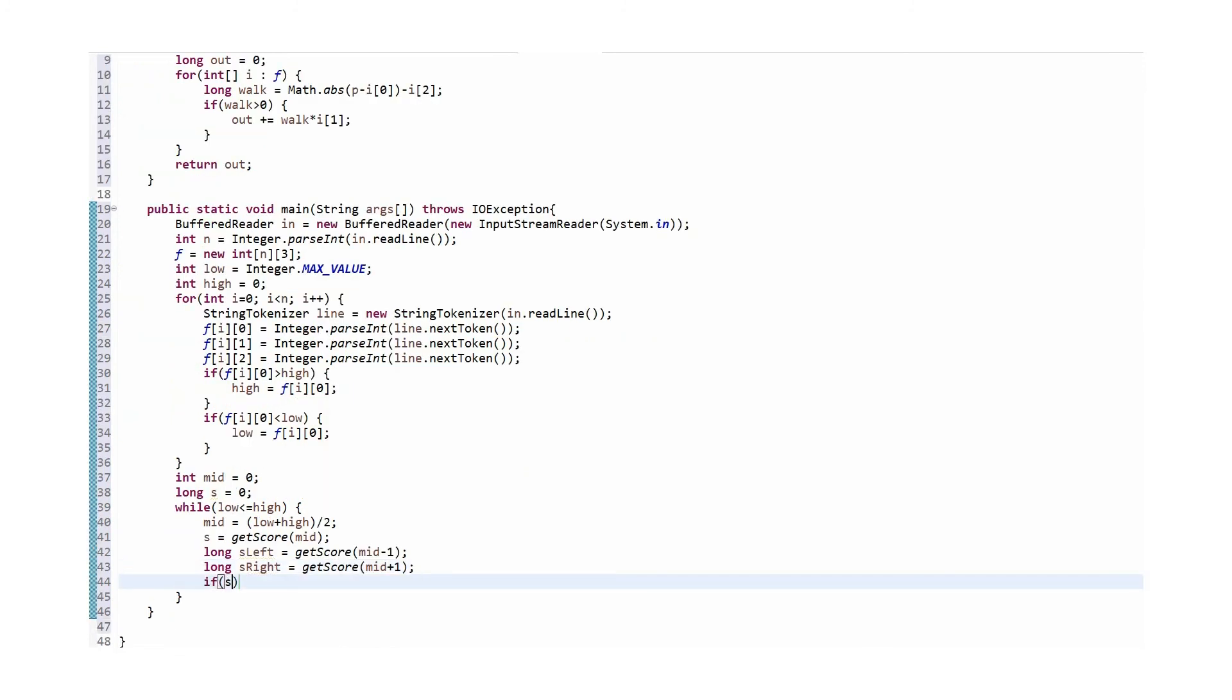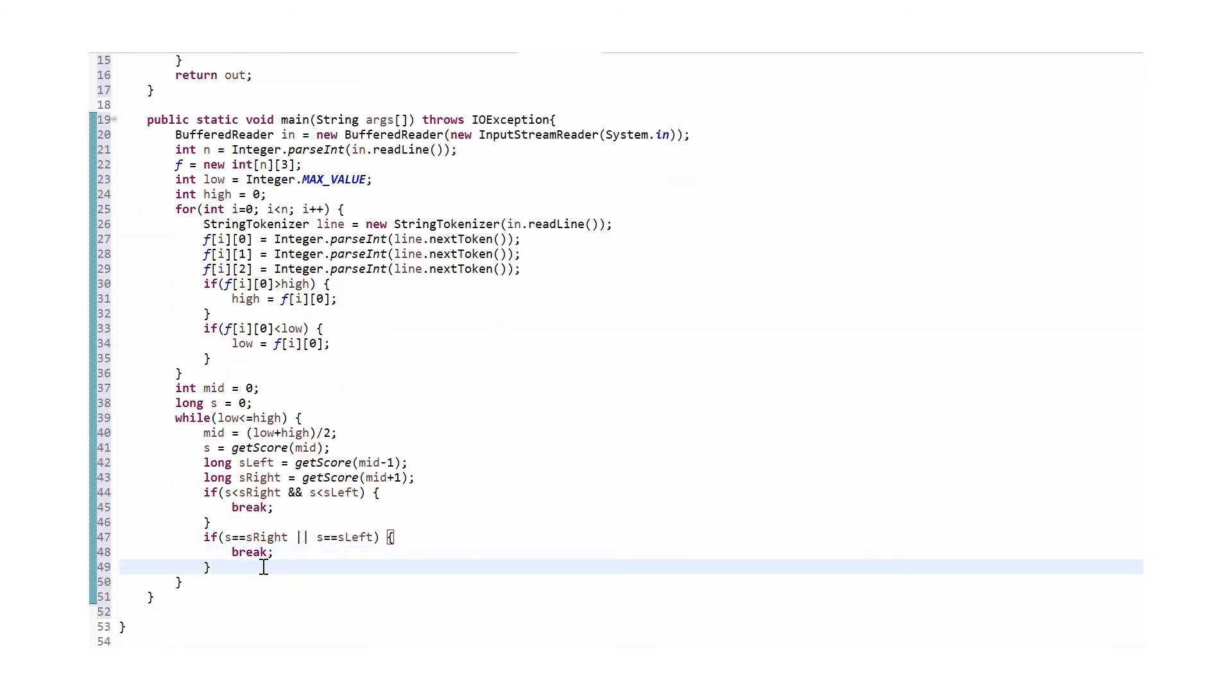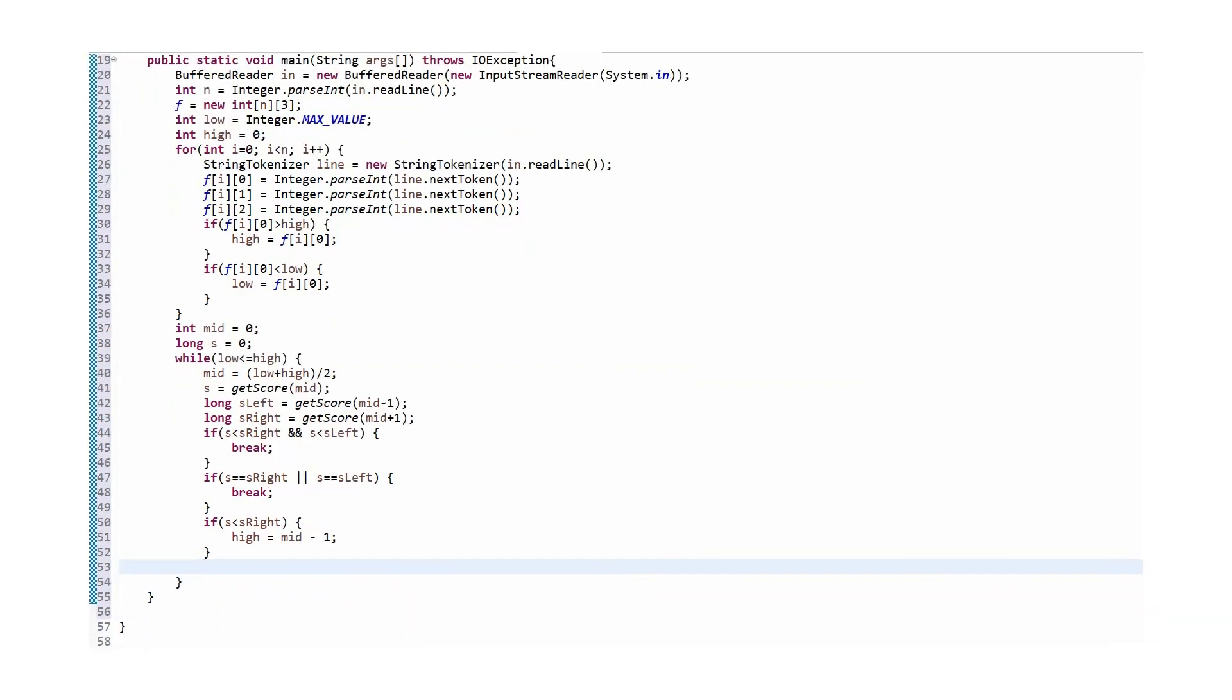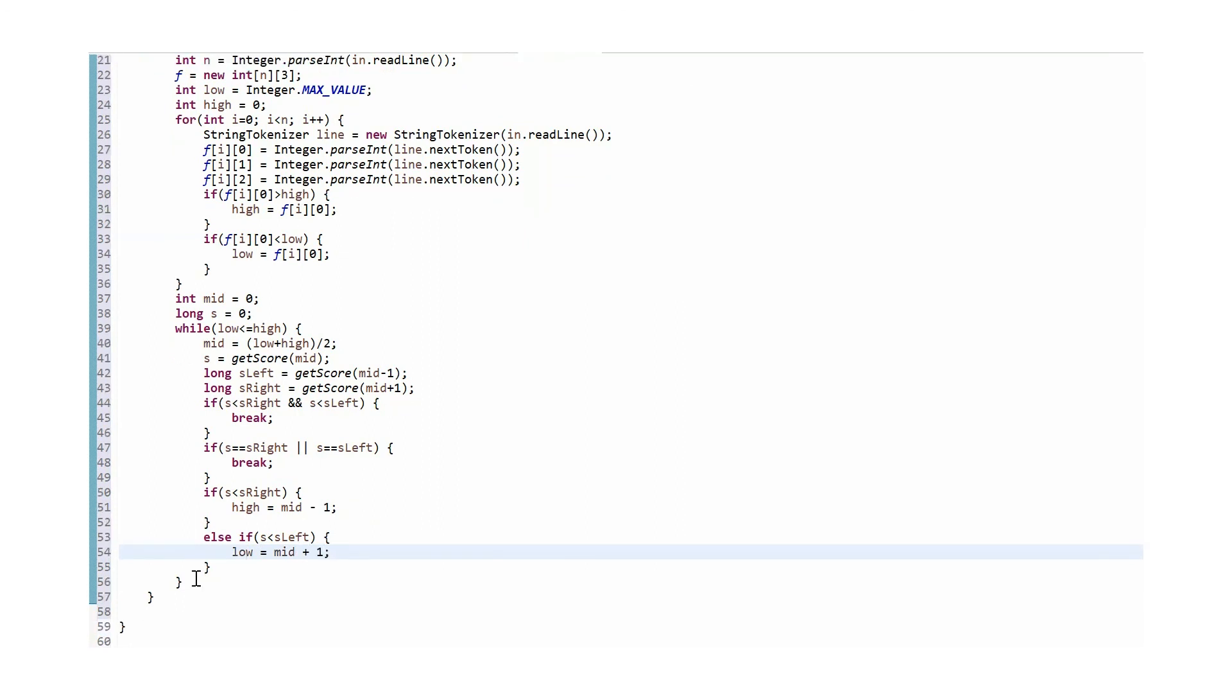Now that I have calculated the S values, if the value of S at mid is less than the values to the left and right, meaning we have reached the bottom of the V, we are done and exit the while loop. We can also exit if there is a plateau, meaning the S values are equal between S at mid and S towards the immediate right or left. Then we just have to check the cases where S is not at the minimum. If the value of S at this position is less than the value of S to the right it means we're on the right side of the V so we have to move left, therefore we should decrease high. If it's less than the one to the left then it means we're on the left side of the V so we have to move right and increase low.